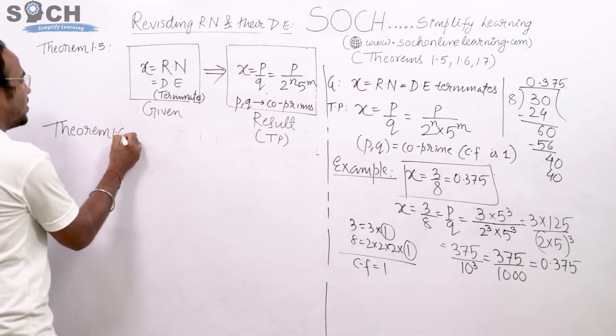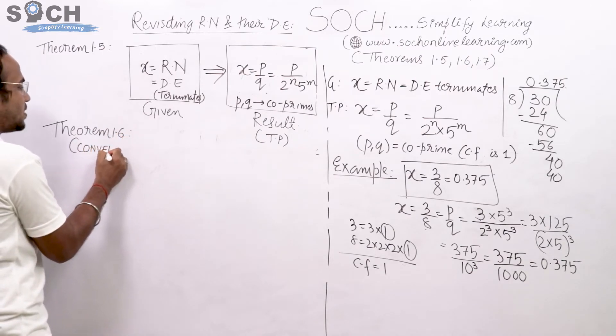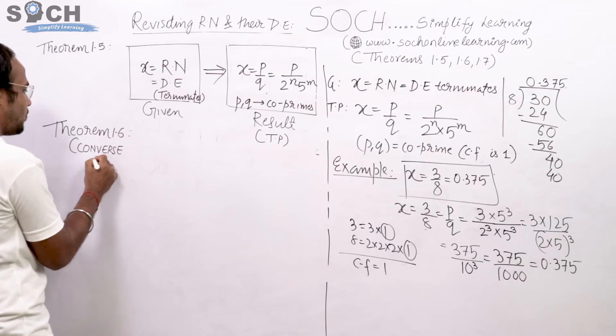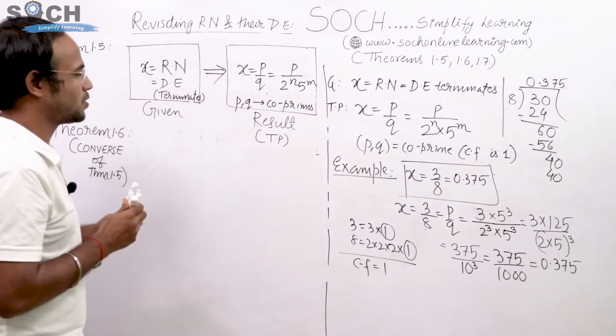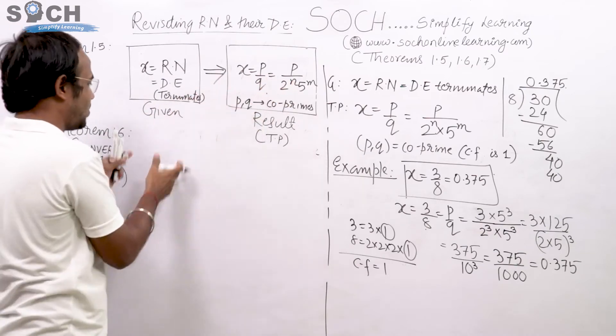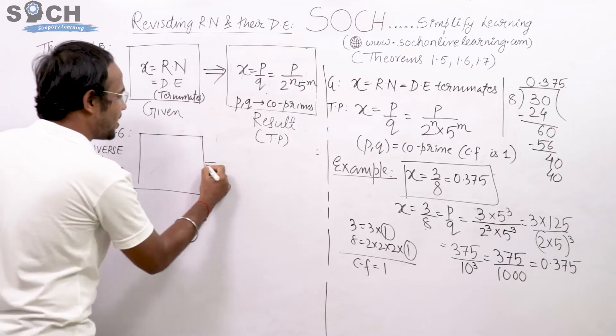If I want to understand next theorem, it is a peanut now for me. The beauty of next theorem is simply one word would suffice. It is simply the converse of theorem number 1.5. So let me check out what is to be done. Simple, swap the boxes.